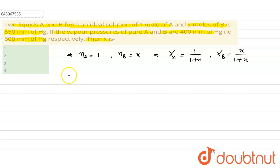Now, we know the relation according to Dalton's law: p total is equal to p naught A times x A plus p naught B times x B. On putting up the values, p total is given as 550.